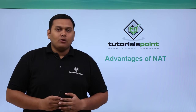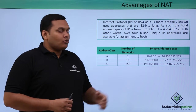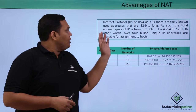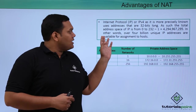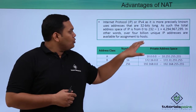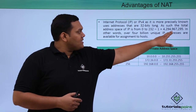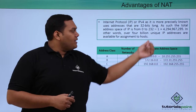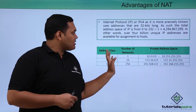In this video we are going to discuss the advantages of NAT. IPv4 uses addresses that are 32 bits in number, and the total address space ranges from 0 to 2^32 - 1, giving 4,294,967,295 hosts. In other words, over 4 billion unique IP addresses are available.